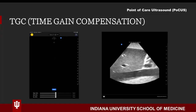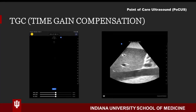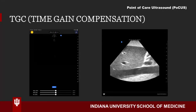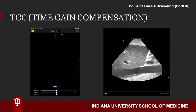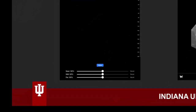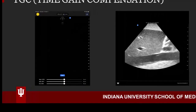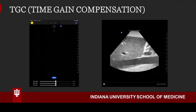One neat feature of the Butterfly IQ probe is time gain compensation. When adjusting gain or depth at the bottom of the tablet, a blue TGC rectangle icon will appear. If selected, you will find three separate horizontal slide bars. These represent zones of your image. If you touch and drag the white circle on each line, you will modify the gain for each particular zone.